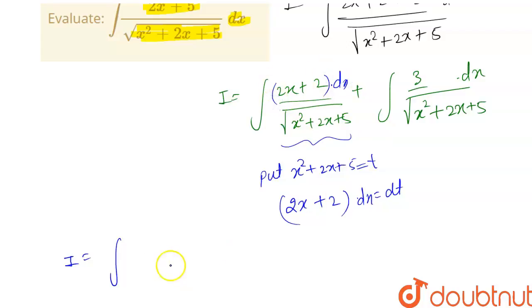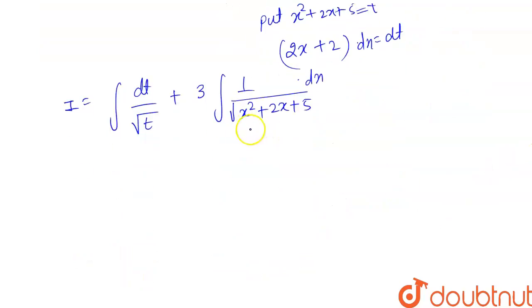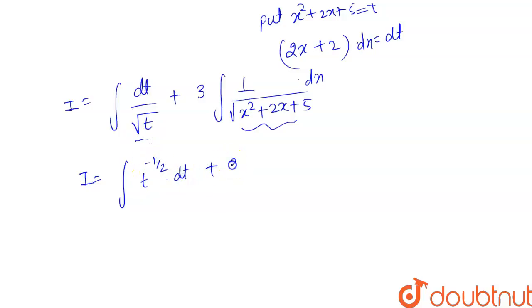So (2x + 2) dx becomes dt. The integral becomes: ∫dt/√t plus 3∫1/√(x² + 2x + 5) dx. This can be rewritten as ∫t^(−1/2) dt plus 3∫1/√(x² + 2x + 5) dx. Now let's make a perfect square to solve the second integration.